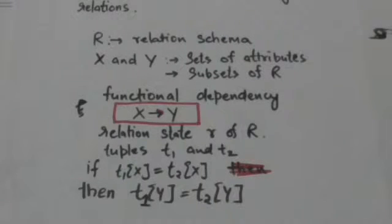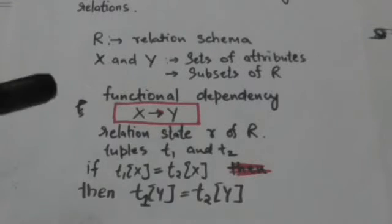The constraint is that for any two tuples t1 and t2 in relation state r that have same values of the X component, then they must also have same values for the Y component.